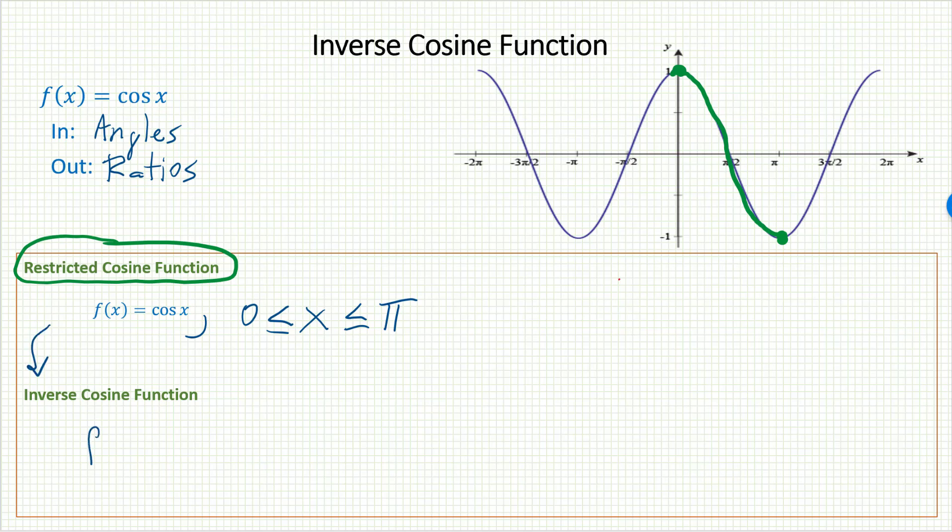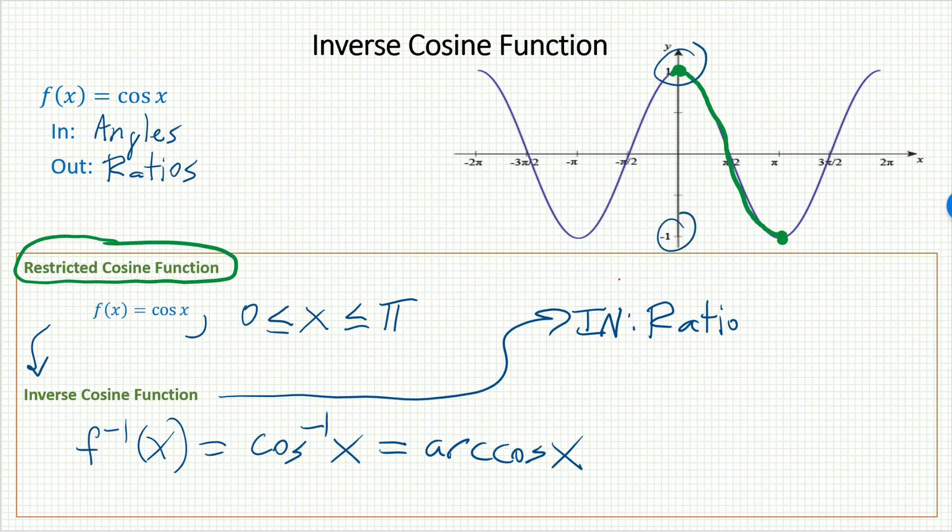We write f inverse x. Again, we have two ways to note it: cosine inverse x, or arc cosine x. And what does this inverse function do? Well, it takes in ratios. Once again, highest ratio 1, lowest ratio negative 1. So only ratios that are between negative 1 and 1.